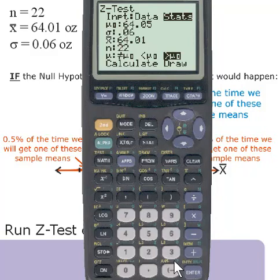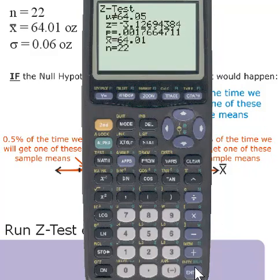Enter in your sample size, 22. Use your arrow keys to highlight the inequality used in your alternative hypothesis, not equal. After it's highlighted, press ENTER to select it. Press the down arrow key to highlight calculate and then press ENTER.